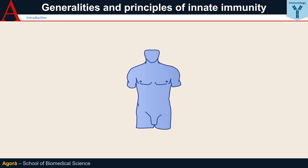Every day we come into contact with countless different microorganisms, able under the right conditions to develop even fatal diseases. Yet we survive most of these encounters. At the same time we spontaneously develop abnormal cells that can potentially generate cancers, however they do not develop so frequently. Why does this happen?